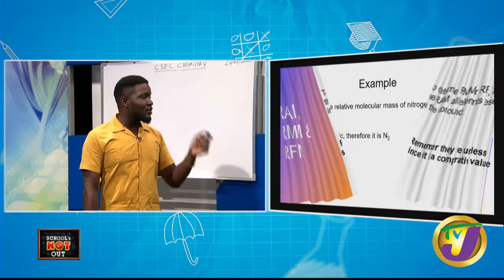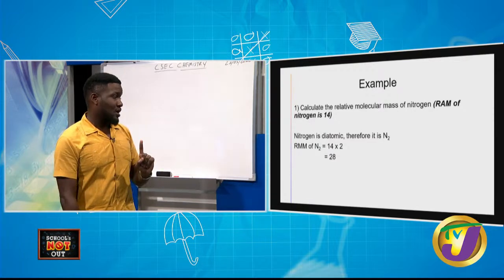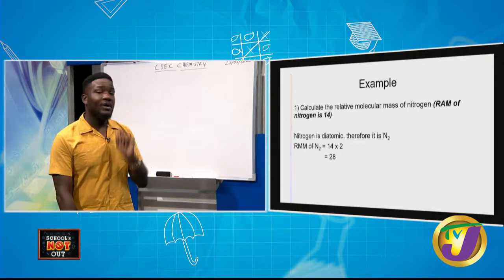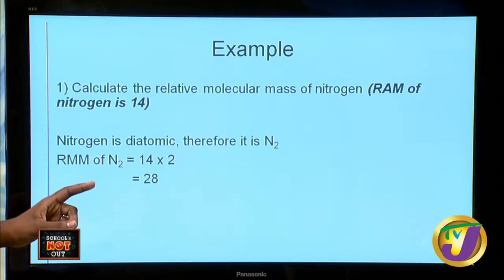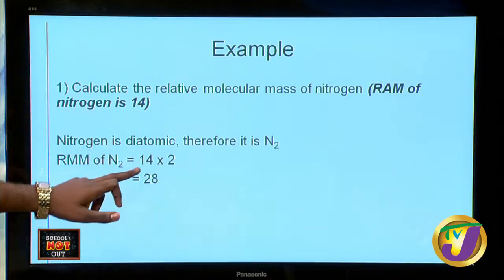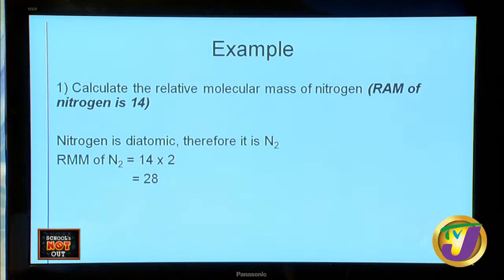To calculate the relative molecular mass of nitrogen: the RAM of nitrogen is 14. However, nitrogen is a diatomic molecule — it does not exist as N, it always exists as N₂. Same for hydrogen and the halogens like chlorine, fluorine, and bromine. So because there are two nitrogen atoms, we multiply 14 by 2, giving us an RMM of 28.